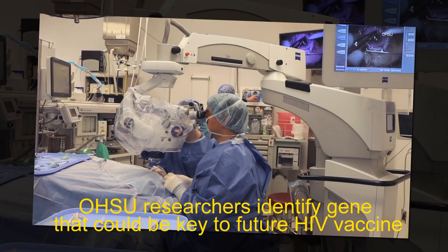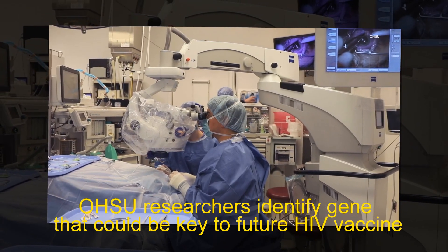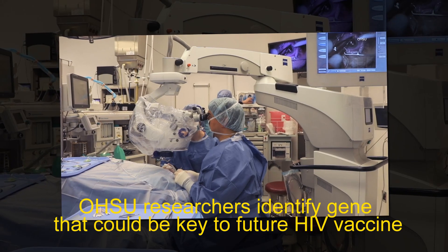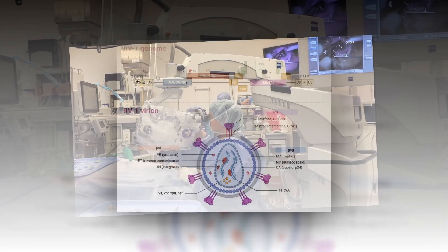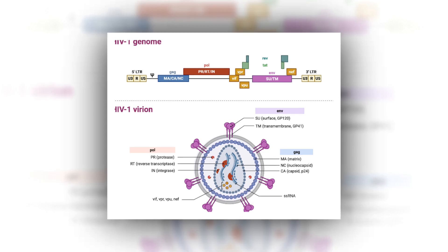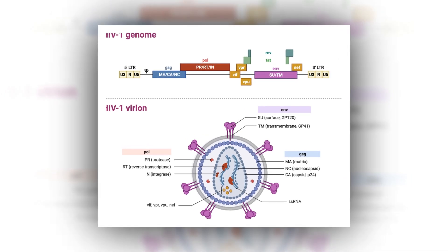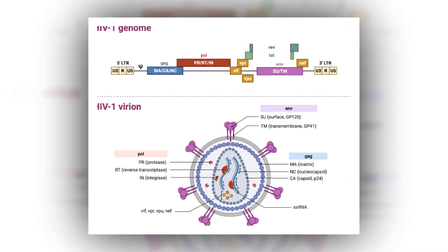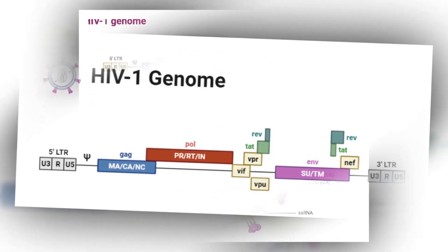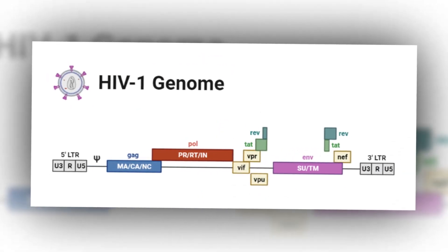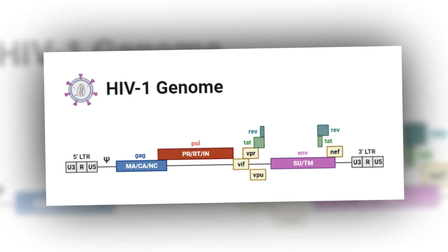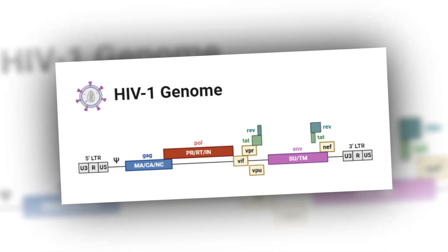OHSU researchers identify gene that could be key to future HIV vaccine. Human CMV gene blocks necessary T-cell response. HIV vaccines engineered without the gene being tested in clinical trials, continuing their journey to develop a vaccine for HIV.